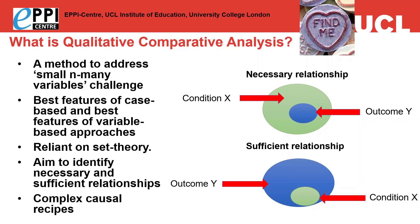In terms of a sufficient relationship, when we see the occurrence of this condition or intervention characteristic, we know that the outcome is going to be triggered — for example, that the intervention will be successful. But we also recognise that there may be other pathways to reach that outcome. Within systematic reviews, we're interested in identifying sufficient relationships and building up complex causal relationships — trying to find these complex recipes that trigger successful interventions.